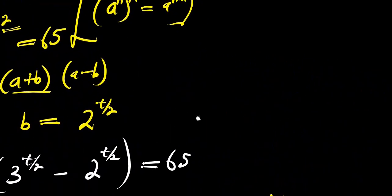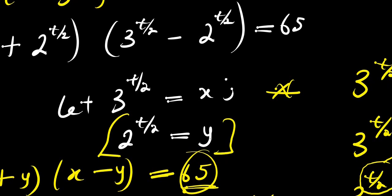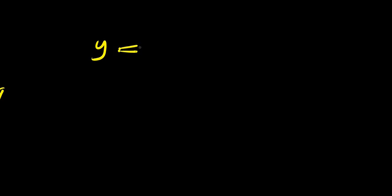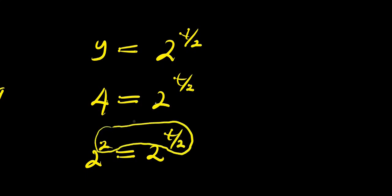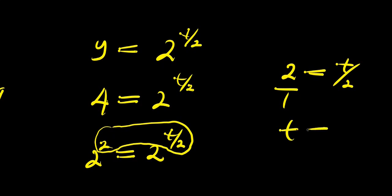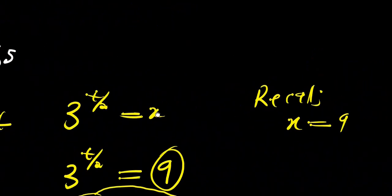Comparing the exponents: t over 2 equals 2. Cross-multiplying, t equals 4. We can also verify using the y equation: 2 power t over 2 equals y equals 4, which is 2 squared, so 2 power t over 2 equals 2 power 2. Comparing exponents again: t over 2 equals 2, giving t equals 4. In either equation, we get the same value of t.